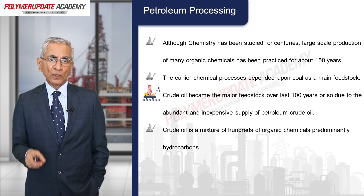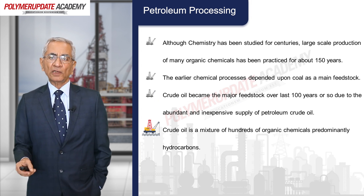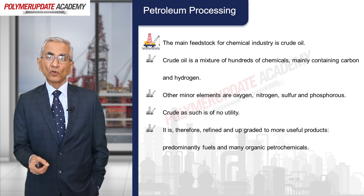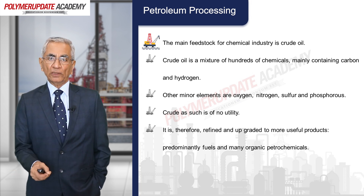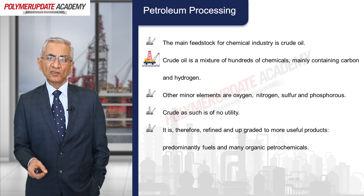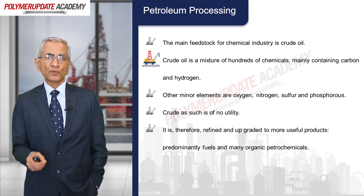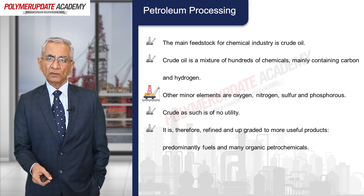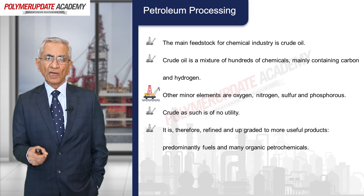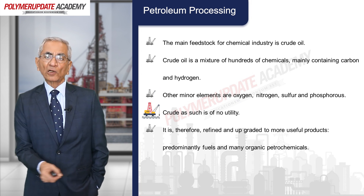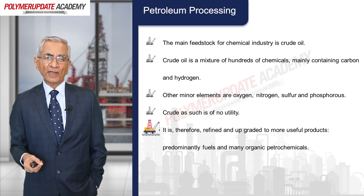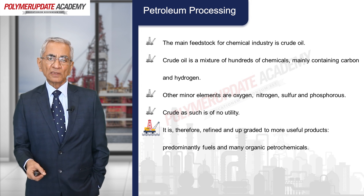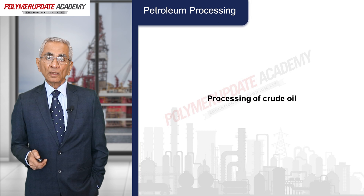Crude oil is a mixture of hundreds of organic chemicals, predominantly hydrocarbons, and is the main feedstock for the chemical industry today. It consists of carbon and hydrogen; other minor elements are oxygen, nitrogen, sulfur, and phosphorus. Crude oil as such may not have any utility — it is therefore refined and upgraded to more useful products, predominantly fuels and many organic petrochemicals.